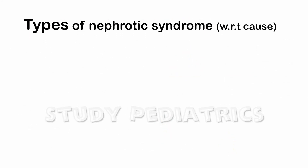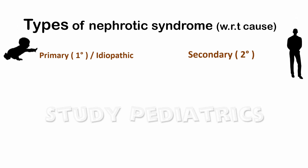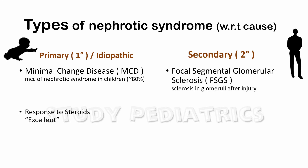With respect to cause, nephrotic syndrome can be divided into two types: primary and secondary. In primary or idiopathic type, the cause is unknown and it is mainly seen in children; the best example is minimal change disease, the most common cause of nephrotic syndrome in children, which responds very well to steroids. In secondary type, the cause is known and is mainly seen in adults; the best example is FSGS — focal segmental glomerular sclerosis — which causes injury and sclerosis of glomeruli, resulting in no or poor response to steroids.